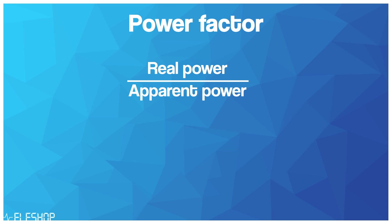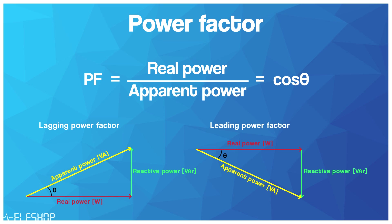Then divide it by a thousand to convert watts to kilowatts. The ratio between the real power and the apparent power is called the power factor. The lower the power factor, the more power is being consumed than is actually needed and thus is wasted. When the load is ideally resistive, the power factor is equal to one. If the power factor is lower than one, then there is reactive power.